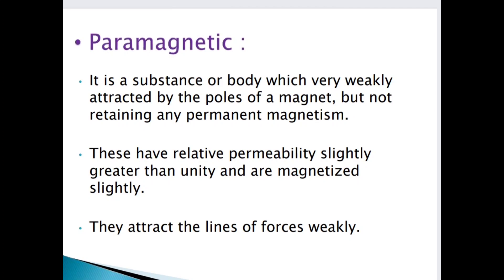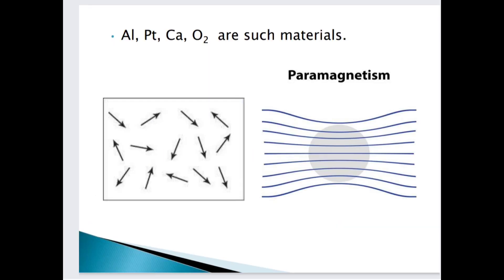The examples of paramagnetic materials include aluminum, platinum, calcium, and oxygen. Additionally, paramagnetic materials also include magnesium, molybdenum, lithium, and tantalum. These are all paramagnetic materials.